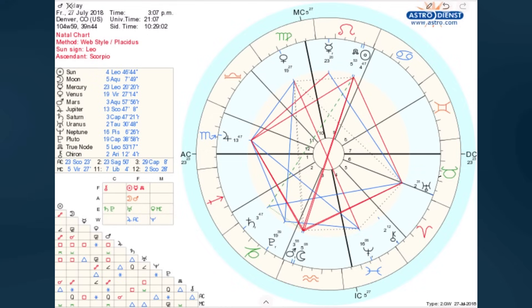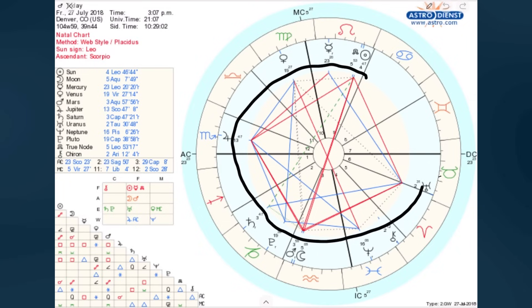The next thing the chart shows is aspects, which are relationships or distances between planets. Each of these aspects — the different distances between the planets — have different meanings. If a planet is one sort of distance from another planet, it means one thing, and if it's a different distance, it means another thing. The aspects are listed just inside the planets in this inner circle where you have the red and blue, and also the green and black lines. The most important lines are the red and blue ones because those are the major aspects, which for our purposes denote the aspects known as the sextile, the square, the trine, and the opposition.